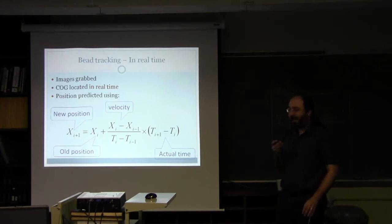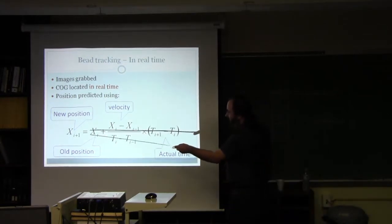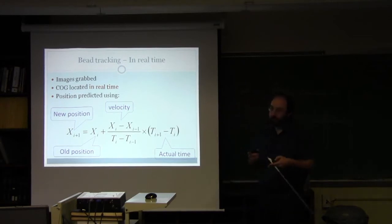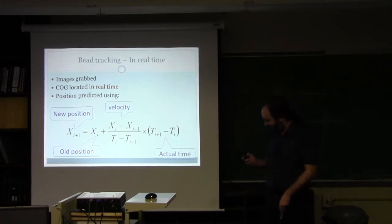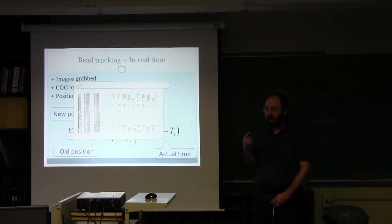In order to track the cells, we grab images sequentially, locate the cells in the image in real time, and then predict the position using this formula which is nothing more than the old position plus the velocity times whatever time interval we're looking at. While this looks simple, there's quite a lot of bookkeeping that needs to be done to make sure that you're always tracking the same cell between the different images, even if it, for some reason, isn't imaged in one of the frames.